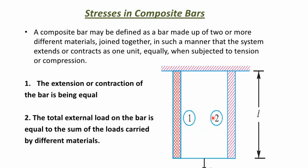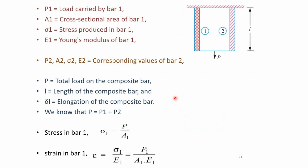Here, P1 is the load carried by bar 1, A1 is the cross-sectional area of bar 1, sigma 1 is the stress produced in bar 1, and E1 is the Young's modulus of bar 1. Similarly, P2, A2, sigma 2, and E2 are the corresponding values for bar 2. P is the total load on the composite bar, L is the length, and delta L is the total elongation.